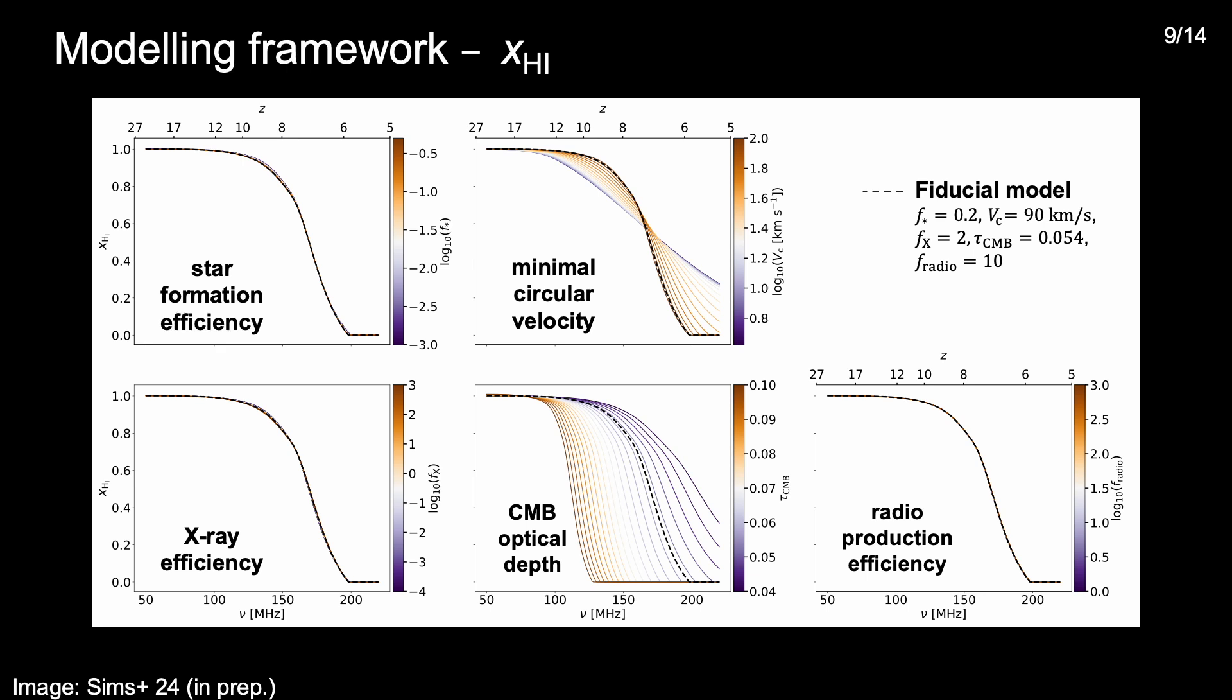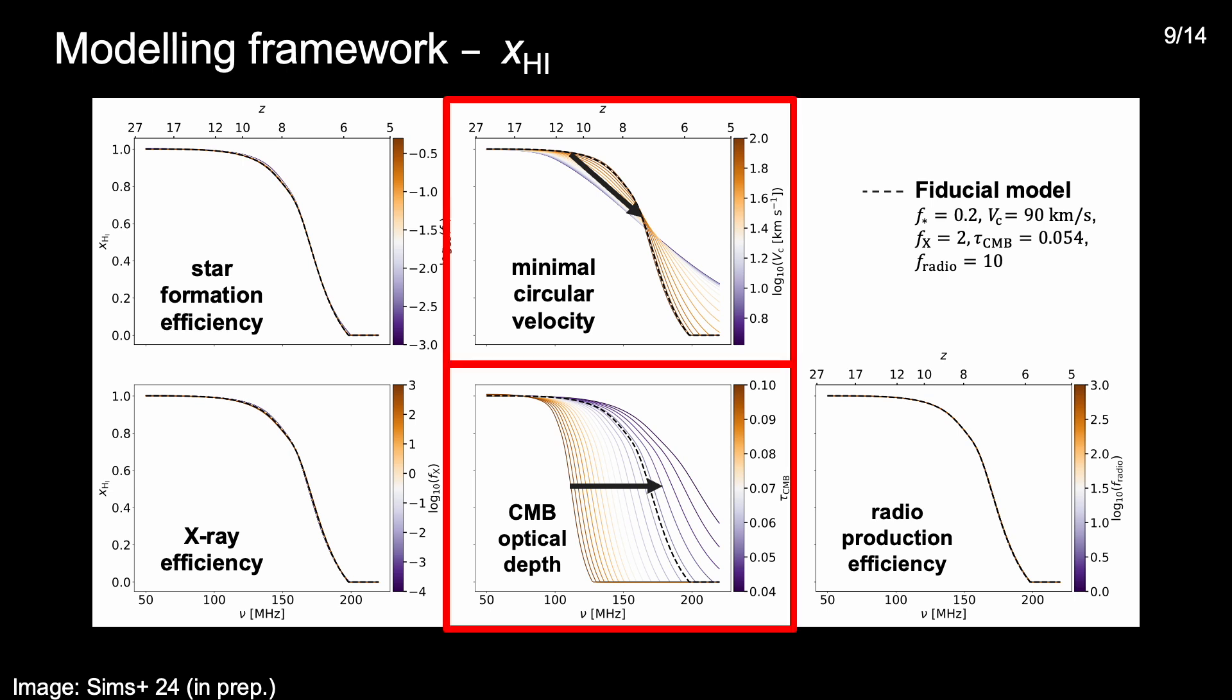Finally, this plot shows the same thing, but for the IGM neutral fraction. And here we see a qualitatively different parameter sensitivity, with the dominant effects being changes in the effective galactic ionizing efficiency, parameterized by the CMB optical depth, implying a later start to reionization for lower optical depth values, and larger minimum circular velocities corresponding to more rapid reionization dominated by more massive galaxies. And these are therefore the two parameters that we expect to be well determined by neutral fraction and optical depth constraints, such as those from CMB and Lyman line datasets.